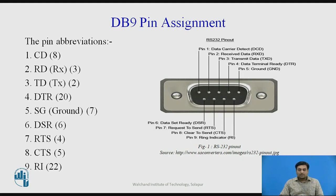Pin number 1 is DCD, Data Carrier Detector. Pin number 2 is Receive Data. Pin number 3 is Transmit Data. Pin number 4 is Data Terminal Ready. Pin number 5 is Ground. Pin number 6 is Data Set Ready. Pin number 7 is Request to Send. Pin number 8 is Clear to Send, and the last pin is Ring Indicator. The numbers in parentheses indicate the corresponding pin numbers for the DB25 connector.